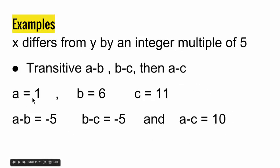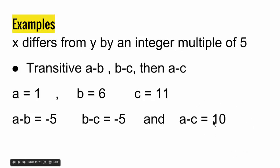Let me give a numerical example. If A equals 1, B equals 6, and C equals 11: A minus B equals negative 5, which is an integer multiple of 5. B minus C equals 6 minus 11 equals negative 5, also an integer multiple of 5. And A minus C equals 1 minus 11 equals negative 10, which is again an integer multiple of 5. So a set of X differing from Y by an integer multiple of 5 is an equivalence relation.